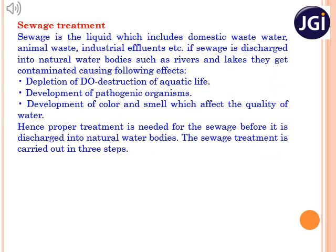Students, now we will see how sewage water is treated and purified. Sewage is nothing but the liquid which includes domestic waste, animal waste, industrial effluents, etc. Improper discharge of this sewage to nature leads to contamination. This results in destruction of aquatic animals because of decrease in dissolved oxygen, disease-causing microorganisms may develop in water, and undesired color and odor may be added to water which affects its quality.